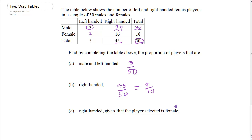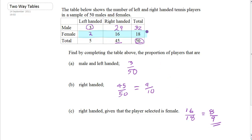Right-handed, given that the player selected is female. We're only interested in females, so let's highlight the females — we're not interested in men in this part of the question. The females total 18 people, so our total we're taking out of is 18. Right-handed females: 16, given that we only have 18 females total, it's just 16 out of 18. Dividing by 2 gives us 8 ninths — 16 divided by 2 is 8, and 18 divided by 2 is 9. So you've only got the females to consider; we're told it's female, so we've only got 18 people to look at, and the proportion that are right-handed is 16 out of 18, which is 8 ninths.